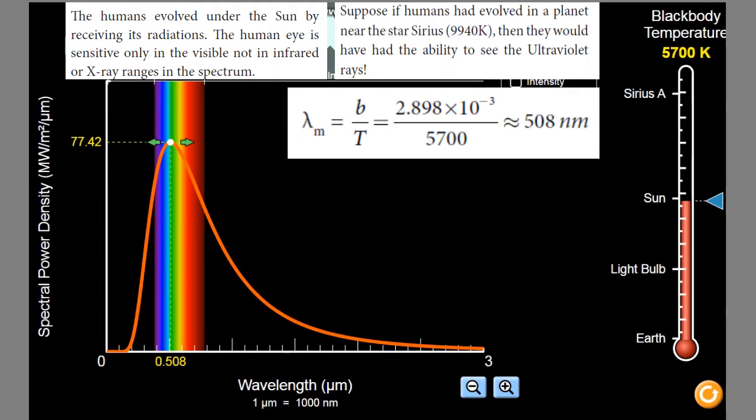In chapter 8, page number 159, heat and thermodynamics lesson, one very interesting question is given in long answer type. In the 8th question, the question is: explain Wien's law and why our eyes are sensitive only to visible rays. For this question, I am going to explain the answer with the help of the simulation.